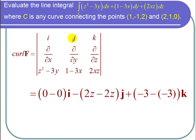And then minus, and for the j component, I get del over del x of 2xz, and that's 2z, minus del over del z of z squared minus 3y, and that's also 2z. So I get 2z minus 2z times j.